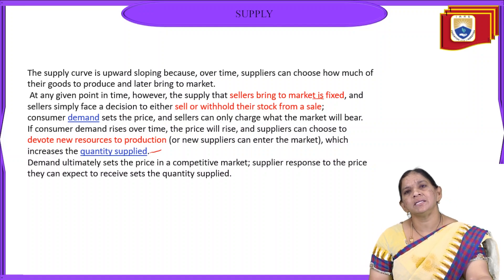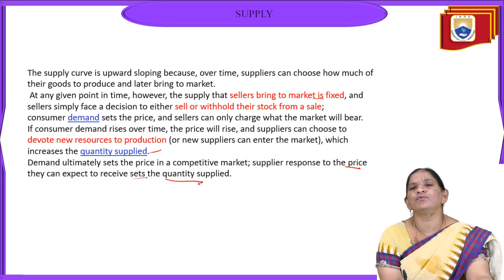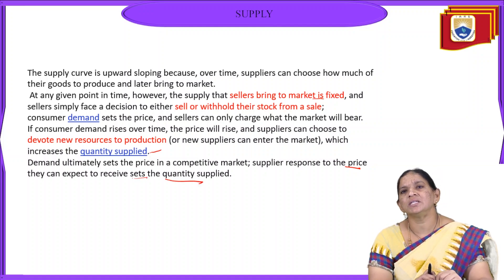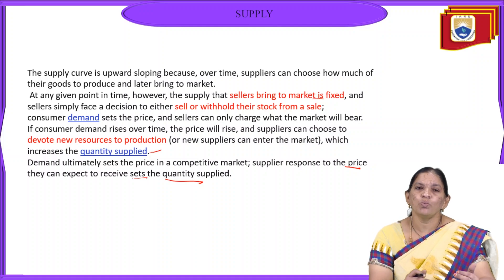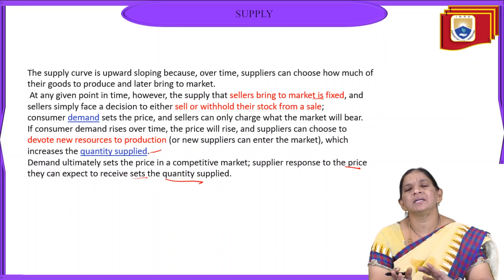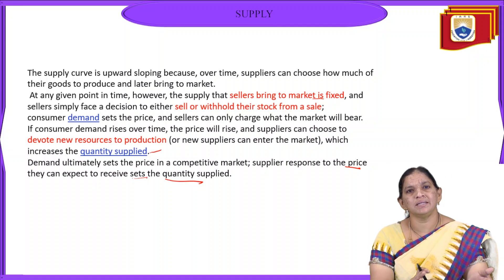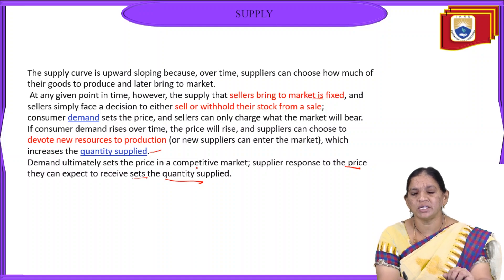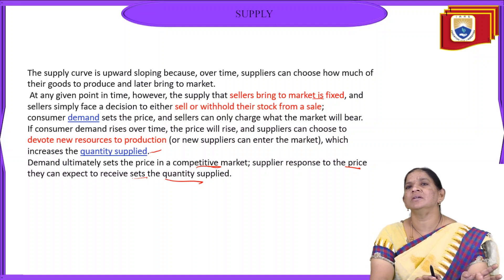Ultimately, demand sets the price in a competitive market and supply responds to the prices to determine the quantity supplied. The external environment is a totally dynamic and competitive one — every minute, every second, competition exists. Once a new product comes into the market, another producer will come with an alternative product. So the producer must understand the competitive sense of the market and respond to prices to set the quantity to be supplied.